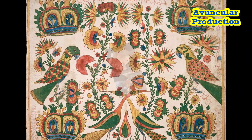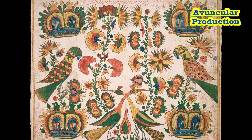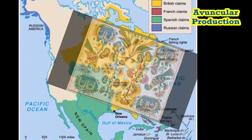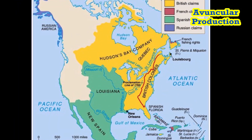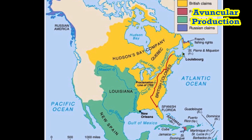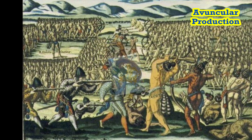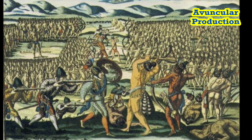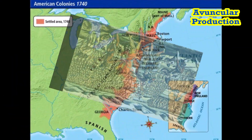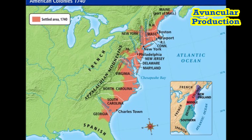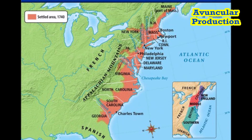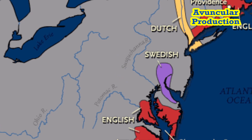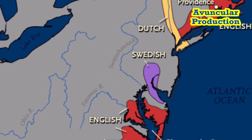28. Woodrow Wilson, 1913–1921, Democratic. Led the nation through World War I and established the League of Nations. 29. Warren G. Harding, 1921–1923, Republican. His term was marred by scandals like Teapot Dome.